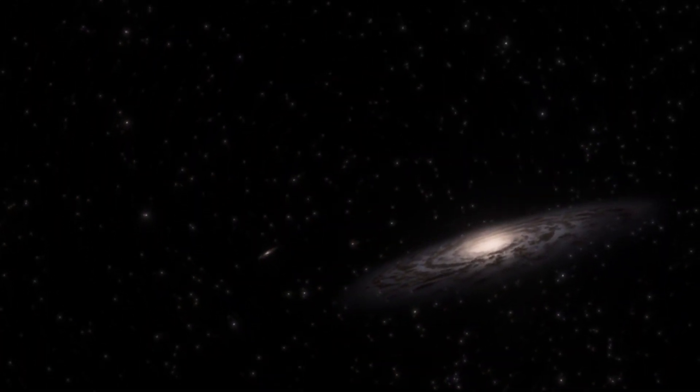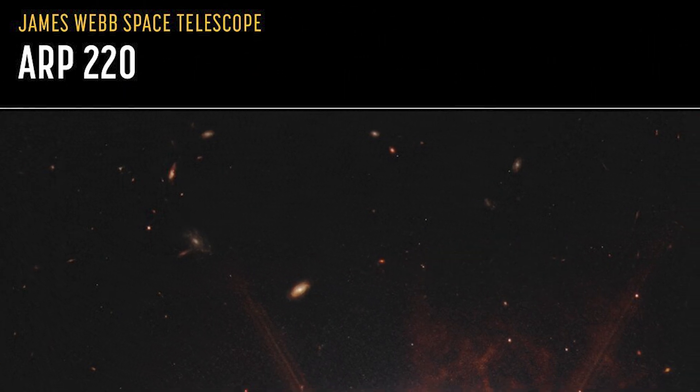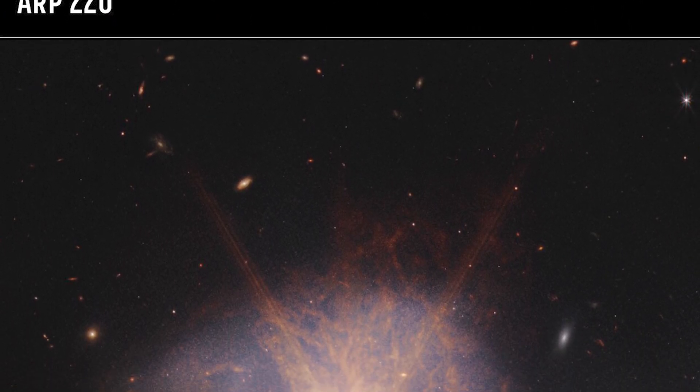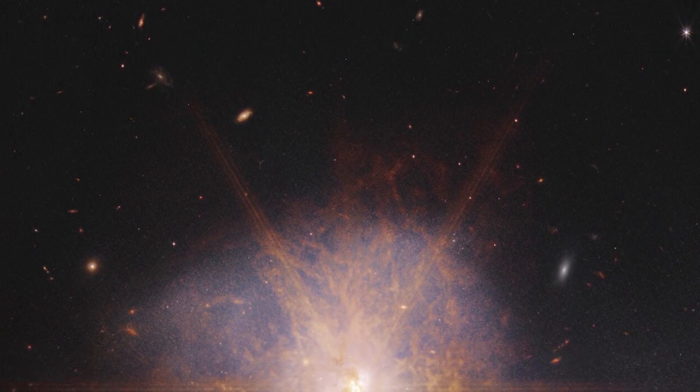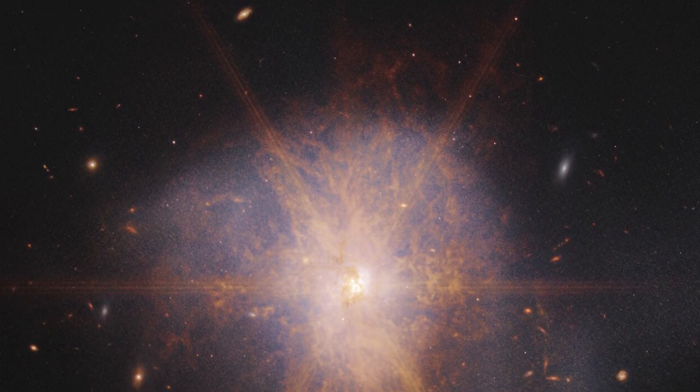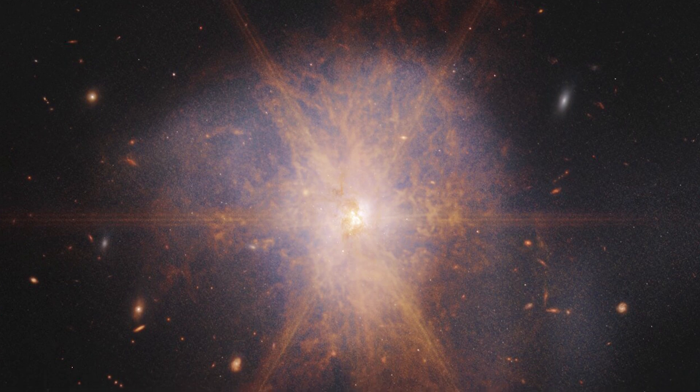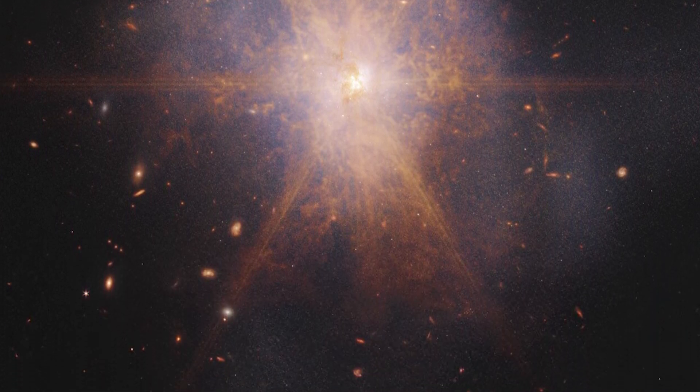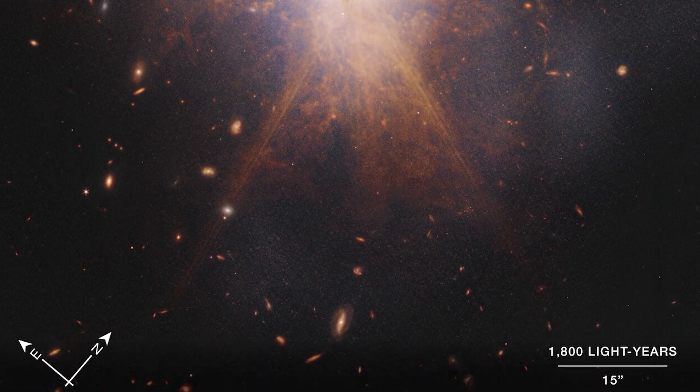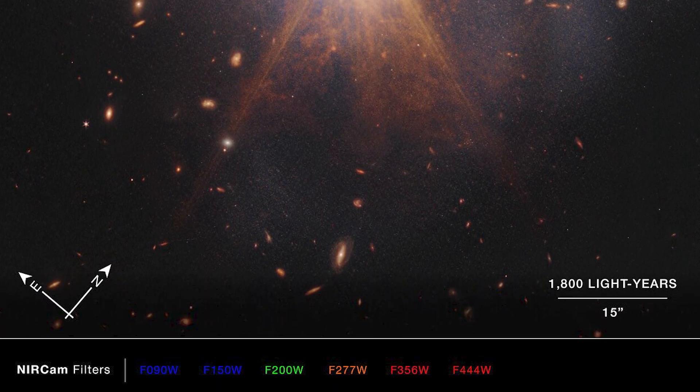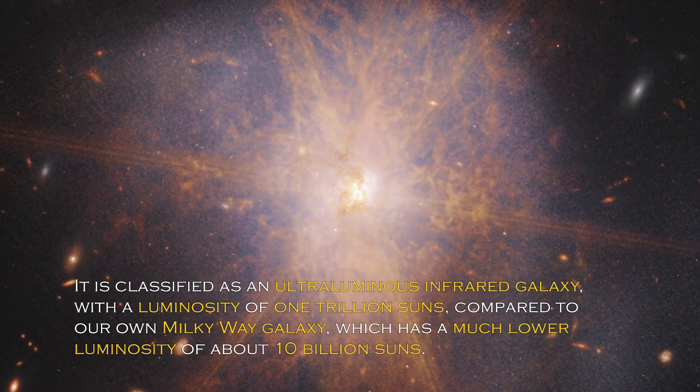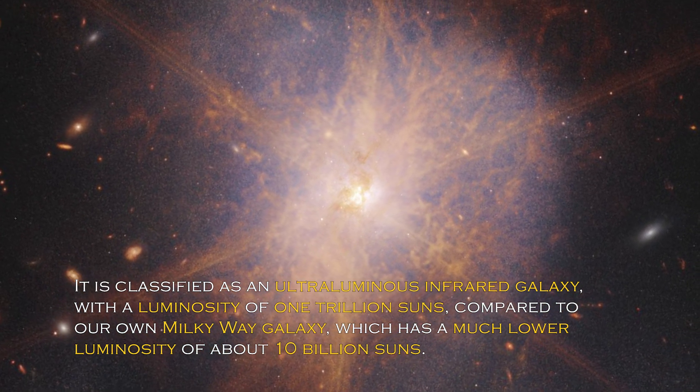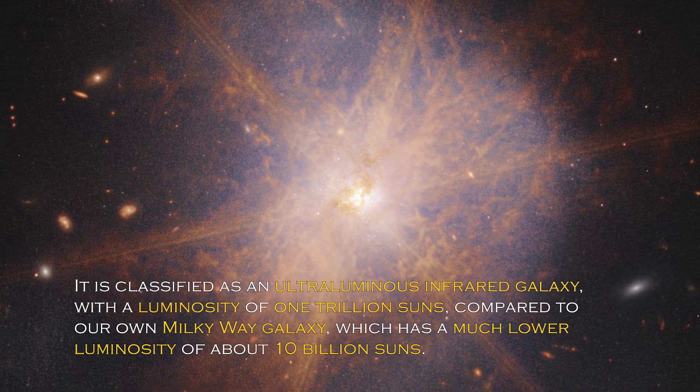NASA has made an exciting announcement about the galactic merger ARP 220, which was captured by the James Webb Space Telescope. This impressive galactic merger can be seen shining among other galaxies in the night sky. When two spiral galaxies merge, the phenomenon known as ARP 220 shines brightest in the infrared, making it perfect for observation by the James Webb Space Telescope. It is classified as an ultra-luminous infrared galaxy, with a luminosity of one trillion suns compared to our own galaxy, the Milky Way, which has much lower luminosity of about 10 billion suns.